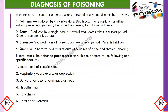Regarding diagnosis of poisoning, a poisoning case can present to a doctor or hospital in four ways: first, fulminant — produced by a massive dose occurring very rapidly, sometimes without preceding symptoms, with the patient appearing to collapse suddenly; second, acute — produced by a single dose or several small doses taken in a short period, with abrupt onset of symptoms; third, chronic — produced by small doses taken over a long period, with insidious onset; fourth, sub-acute — characterized by a mixture of features of acute and chronic poisoning.